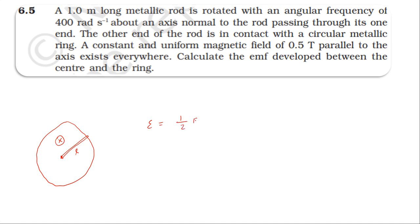The EMF is given by the formula: one-half times B times r squared times omega.